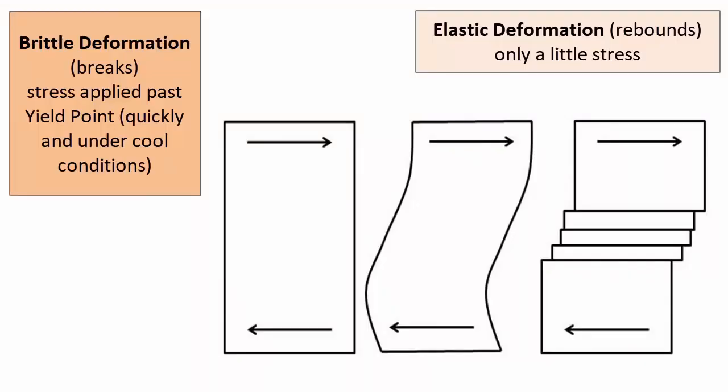What about elastic versus brittle deformation? Elastic primarily happens along active fault lines at the surface where stresses build just a little before overcoming friction on the fault and the fault slips. Any strain experienced by the rock during the initial stress buildup is then released, and the rocks go back to their original shape. We will discuss elastic deformation and rebound further in the video tutorials on earthquakes.